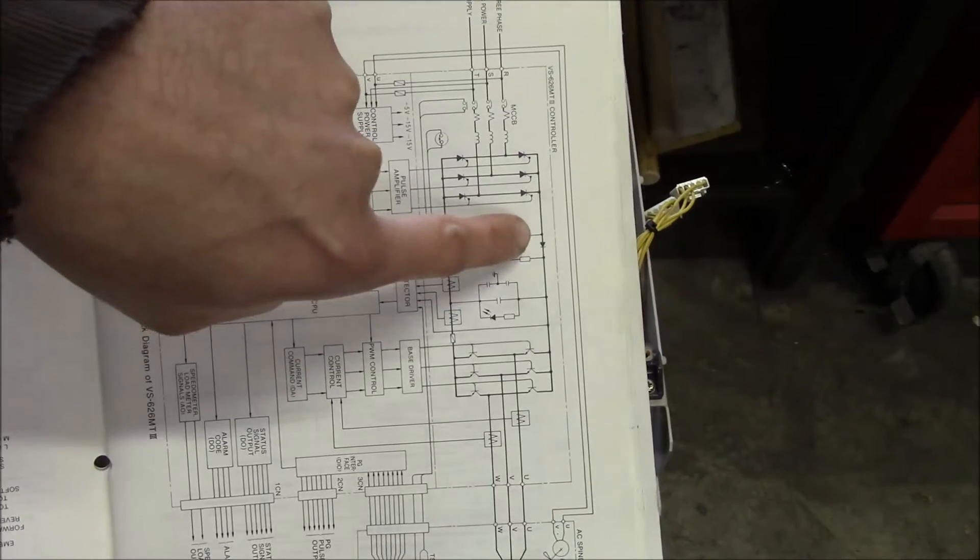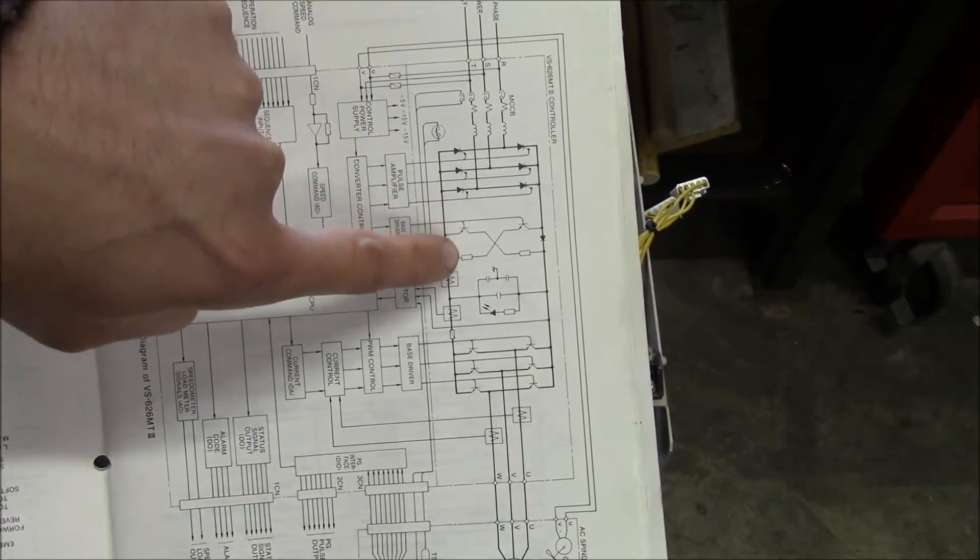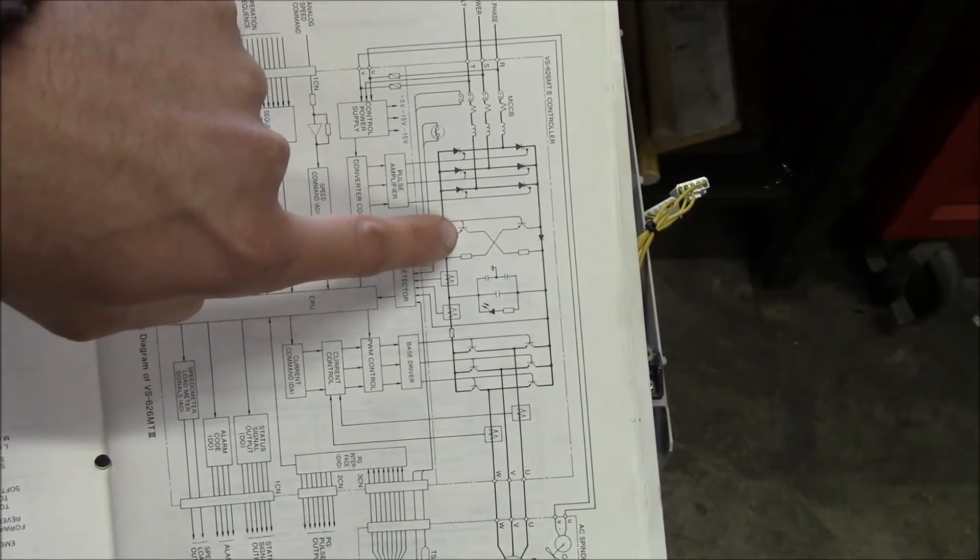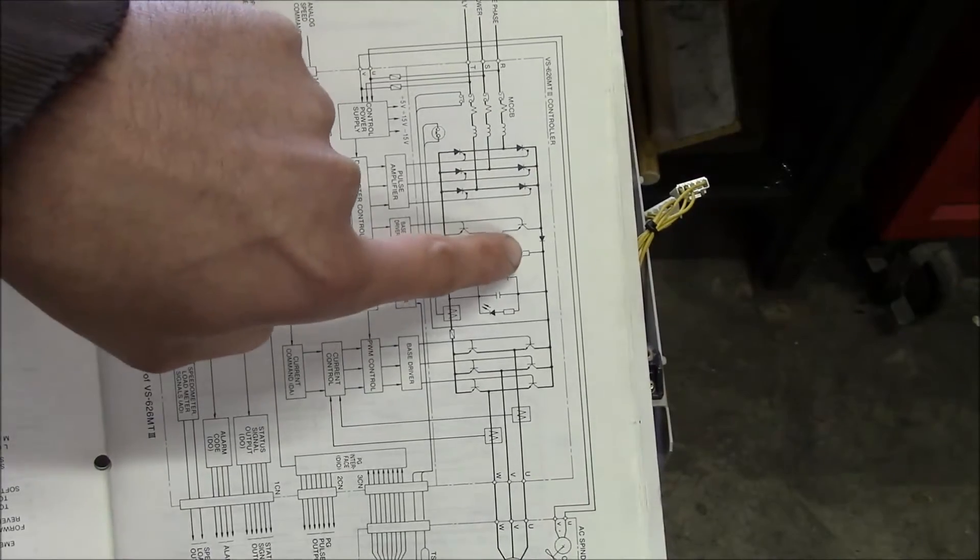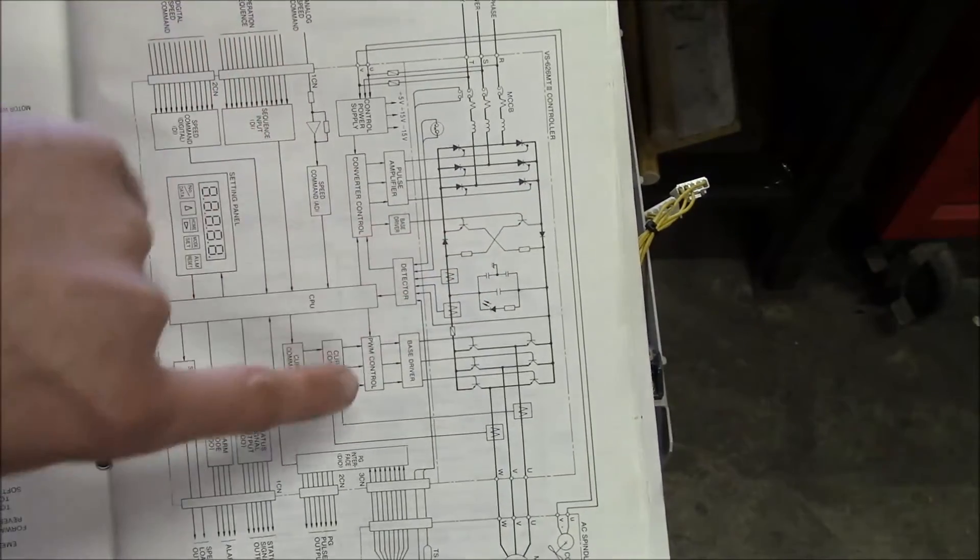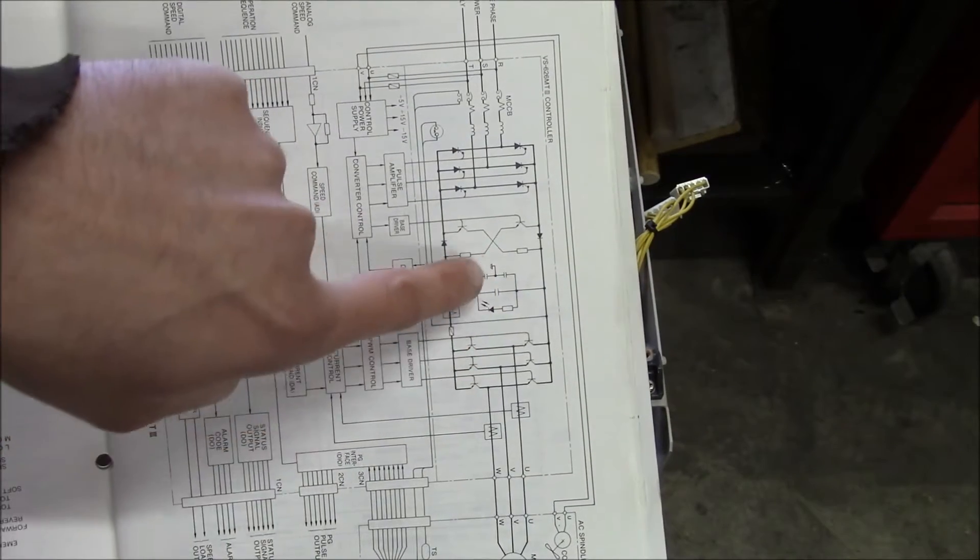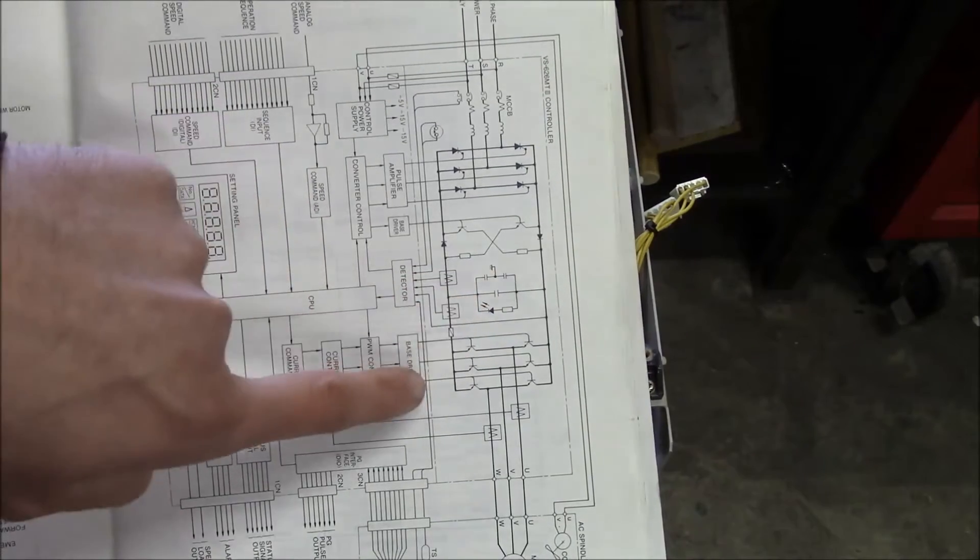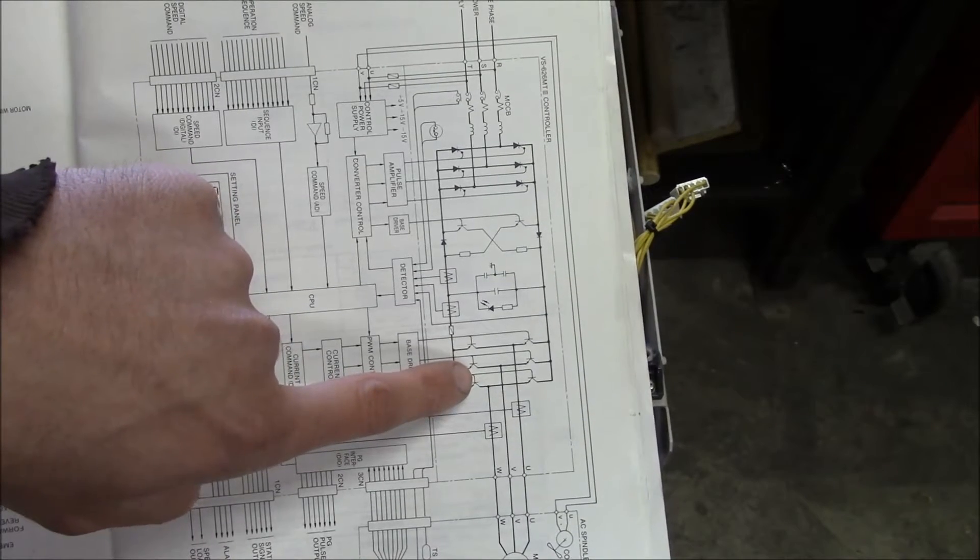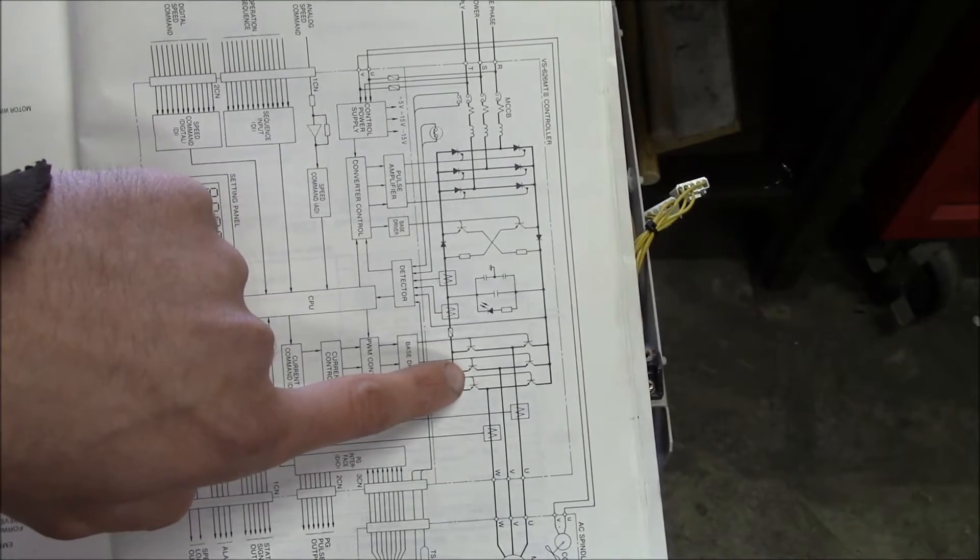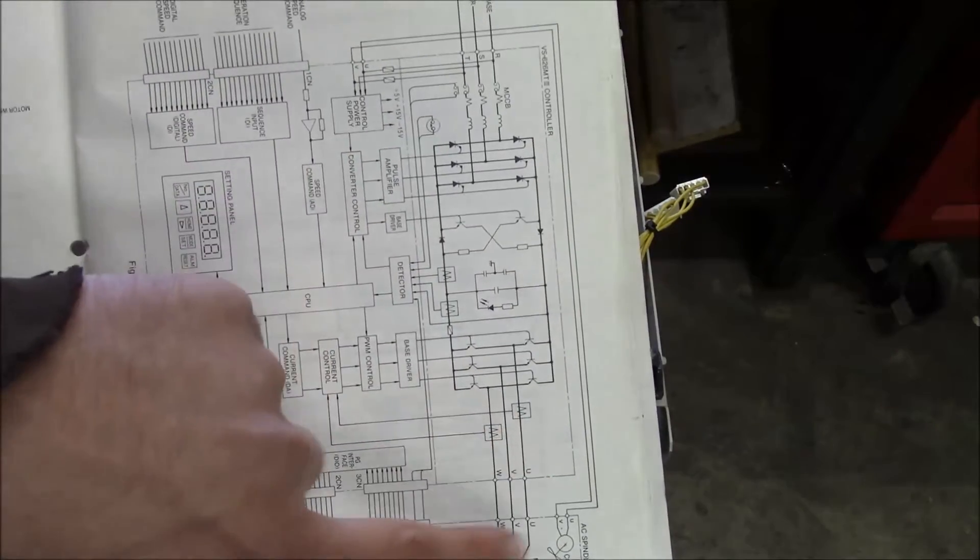And then there's two IGBT transistors that basically fire to do the braking. So these are the braking resistors here, shown by these little boxes. And then this right here is a big capacitor. And then there's some other circuitry involved with that. And then it comes down here to a set of transistors that take the DC bus and turn it back into three-phase power to run the motor.